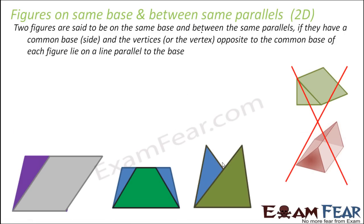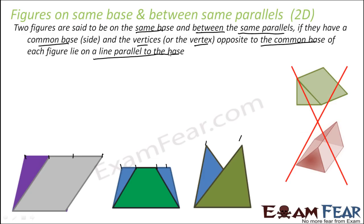Formal definition: two figures are said to be on the same base and between the same parallels if they have a common base, and the vertices — or vertex in the case of triangles, and vertices in the case of parallelograms — opposite to the common base all lie on a line that is parallel to the base. Here you can see these lines are parallel to their respective bases.